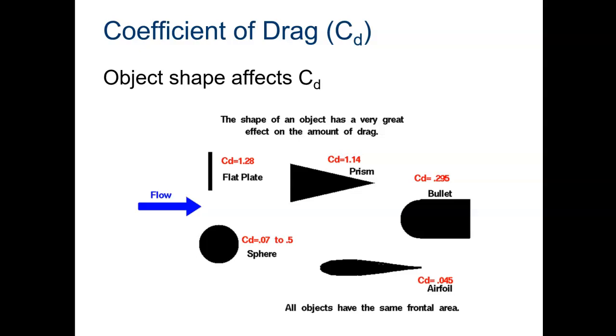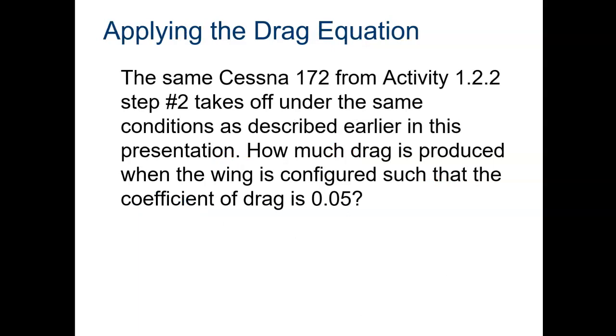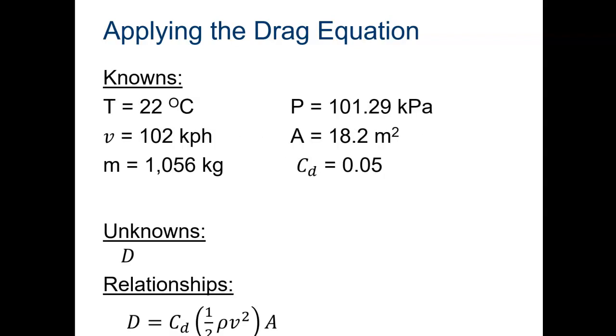Let's take a look at an application. Here we have that same Cessna 172. The question is, how much drag is produced when the wing is configured such that the coefficient of drag is 0.05? We were given temperatures, velocity, mass, pressure, the wing area, and now the CD. What we need to figure out is the drag. We want to show our knowns, our unknowns, and then our relationships.